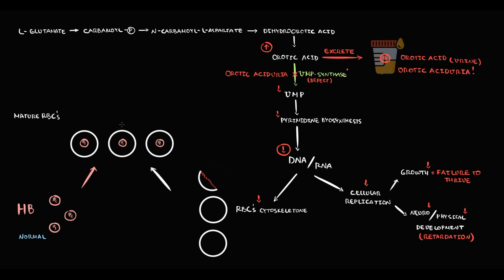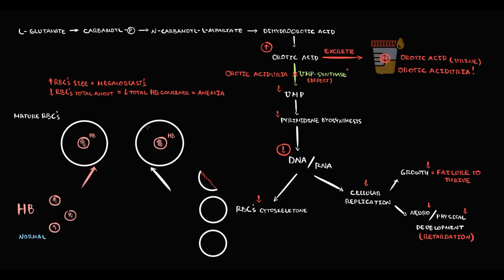So instead, the organism prefers to use all available cytoskeleton materials to make two huge red blood cells and pack inside them as much hemoglobin as possible. Such huge red blood cells we call megaloblasts. But as we see, the total quantity of red blood cells decreases. And with decreasing total amount of red blood cells, total hemoglobin concentration decreases. And this state we call anemia.